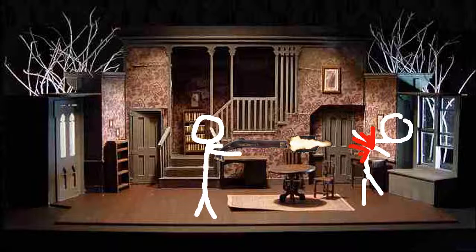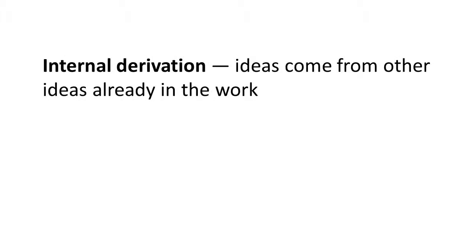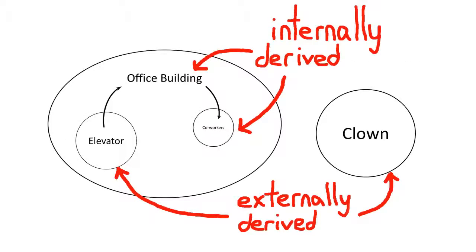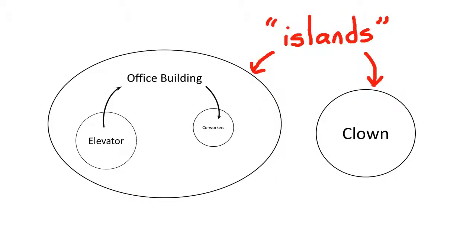There's another way we can approach holism, and that's by looking at it as a byproduct of a certain kind of process. In the previous video, I made a distinction between two kinds of elements: those that are internally derived, meaning they come from elements that already exist inside the work, and those that are externally derived, meaning they come from some outside arbitrary source. I used an example of an improv sketch, where suggestions from the audience represent externally derived constraints, and the decisions made by the performers in response to these suggestions represent internally derived constraints. While external derivation is necessary to some degree, it inhibits holism. Its tendency is to pull works apart, to fracture them into a series of unconnected islands. Internal derivation works in the opposite direction — it promotes holism by bringing elements together and congealing them into a bigger picture.